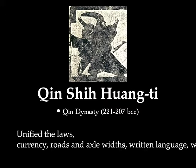Qin Shi Huangdi imposed very serious punishments for anyone who did not follow his rules. He unified all the laws under his domain. He created unity of currency, roads, and axle widths, written language, and many other aspects besides. This is how he was able to create a kind of unified country that expanded out to fairly close to modern Chinese borders today.